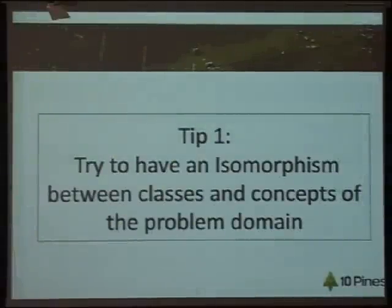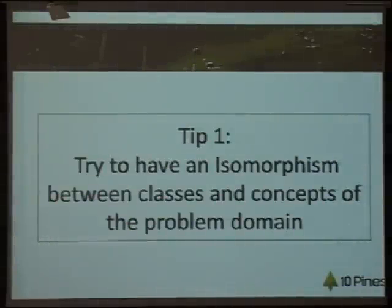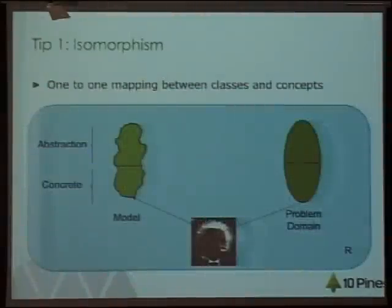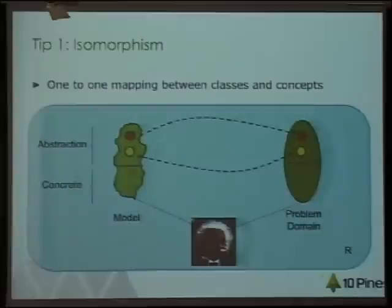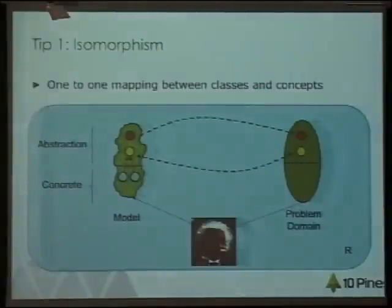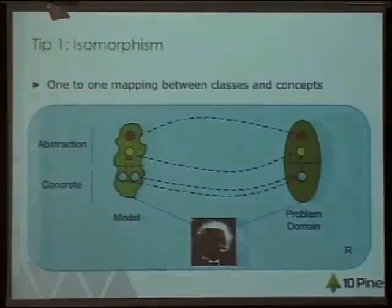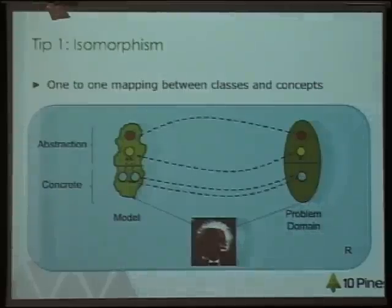First tip: don't be afraid of creating classes. Sometimes people think, oh no, there are too many classes. The idea is to try to have an isomorphism between the concepts in the problem domain and the abstractions — the classes — that you create. For me, it's very important to try to have this isomorphism. Of course there are implementation details, like having two date objects to represent the same date — that's not a problem. But from the conceptual, knowledge representation point of view, it is good to have this one-to-one mapping.